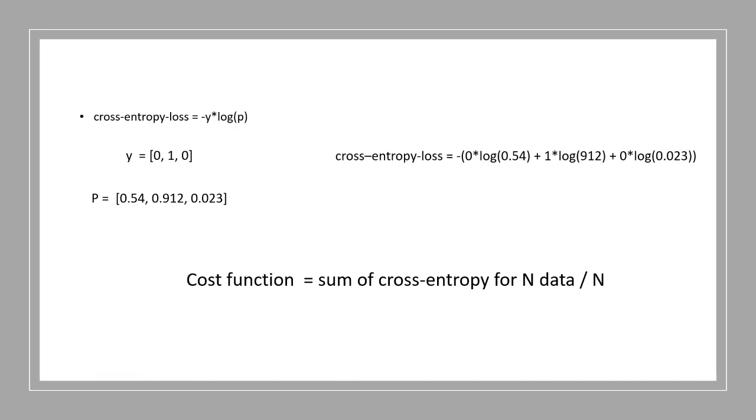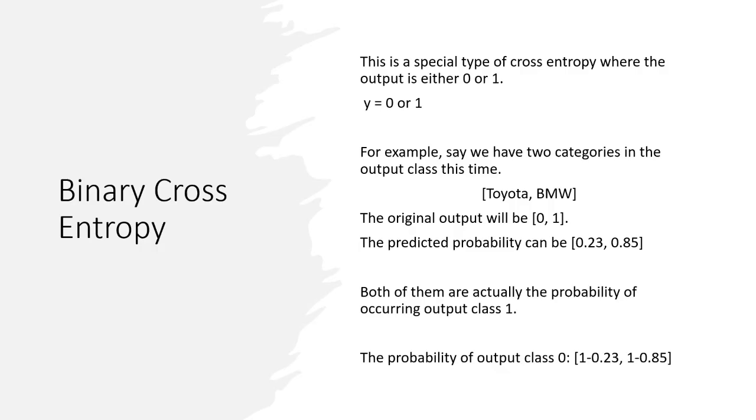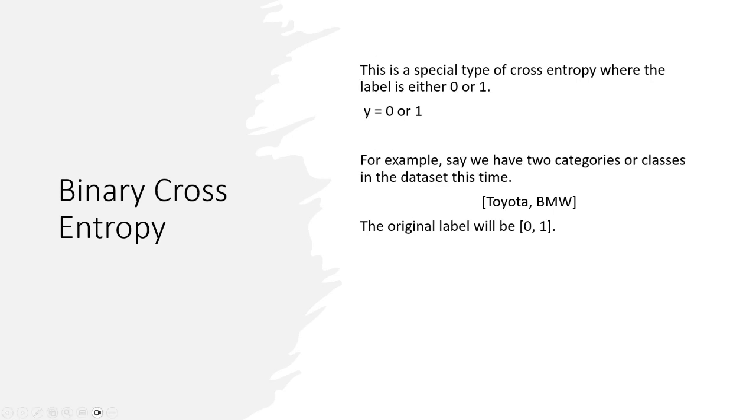But when we have only two classes in the dataset, we can use a different cost function called binary cross-entropy. This is a special type of cross-entropy where the label is either 0 or 1. For example, say we have two categories or classes in the dataset this time, that is Toyota and BMW. So the original label will be 0 and 1.